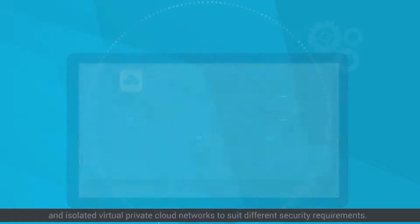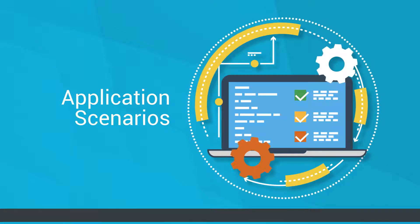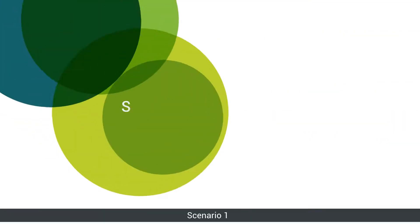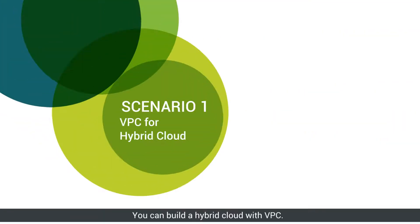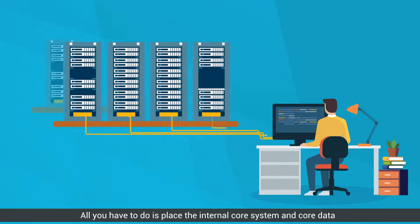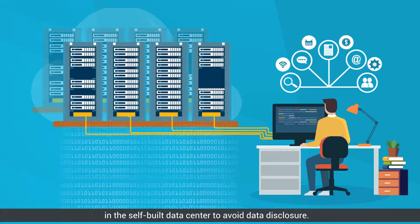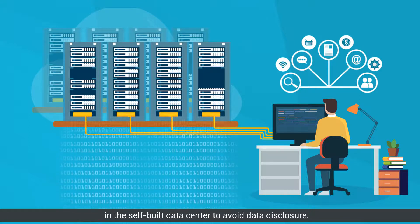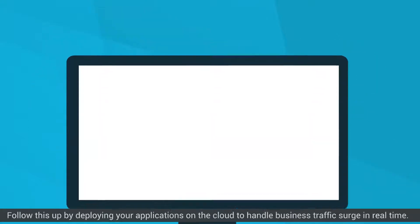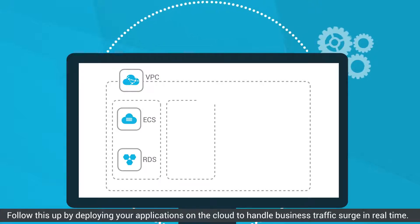Moreover, with Alibaba Cloud VPC you can create customizable and isolated virtual private cloud networks to suit different security requirements. Let's take a look at some application scenarios. Scenario one: you can build a hybrid cloud with VPC. All you have to do is place the internal core system and core data in the self-built data center to avoid data disclosure.